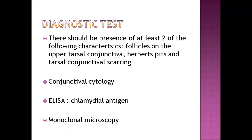For diagnosis of trachoma, we first examine the eye to identify the type of infection. We look for follicles on the upper tarsal conjunctiva, Herbert's pits, and tarsal conjunctival scarring. We can also obtain conjunctival cytology, perform an ELISA test to detect chlamydial antigen in the blood, and obtain monoclonal microscopy — that is, obtaining tissue samples and examining their clones.